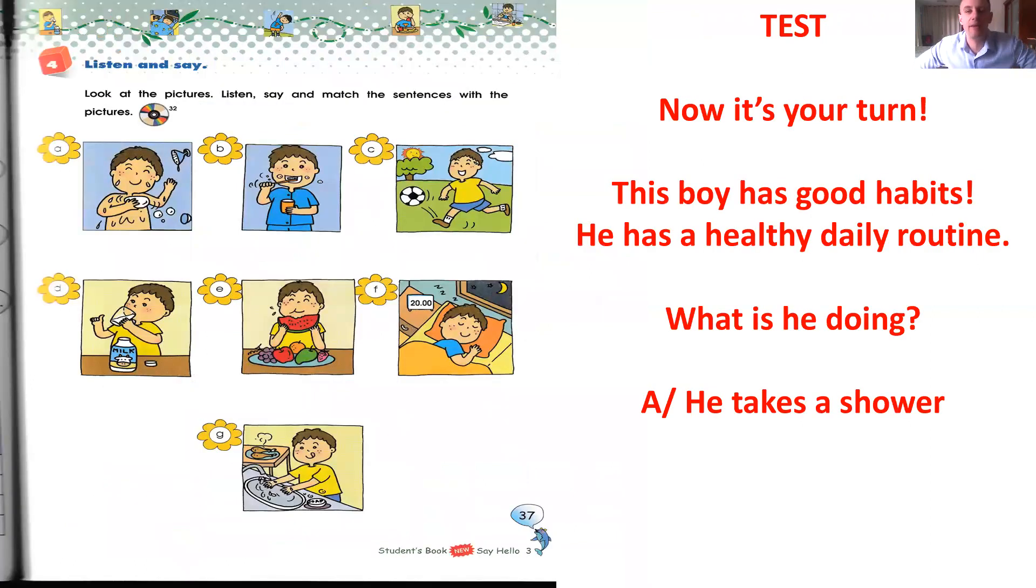Now it's time for a little test. You have a couple of pictures on the left. Take a look at that. This boy has good habits. He has a healthy daily routine. What is he doing? I want you to use a third person of the present simple tense. Number, letter A. He takes a shower. Be careful because we use S. He takes a shower. Now try your best with the others. Click on pause, just after we will make the answers. We will answer together.